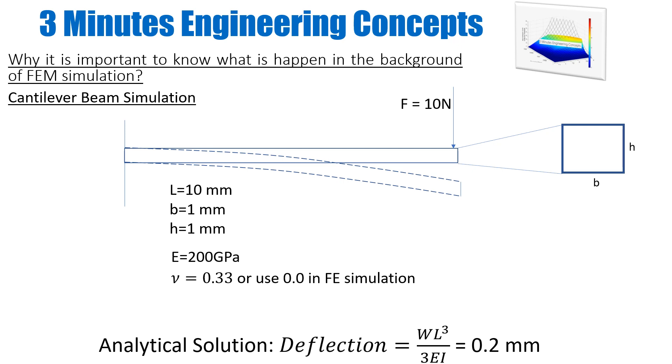I have brought this example of a cantilever beam simulation which is under a concentrated load of 10 Newtons. It has dimensions of 10 millimeters with a cross-sectional area of 1 by 1 millimeters. The material properties I'm using are elastic modulus E equals 200 gigapascals, while Poisson's ratio for metallic material can be 0.33, or for this case you can also use 0.0 in FE simulations.